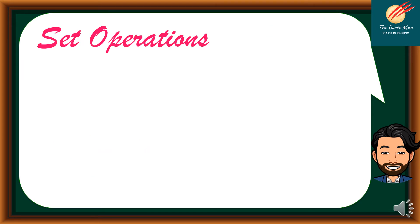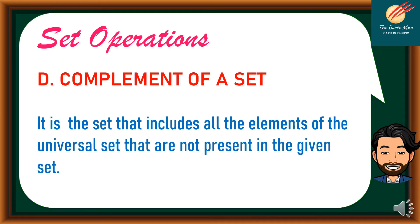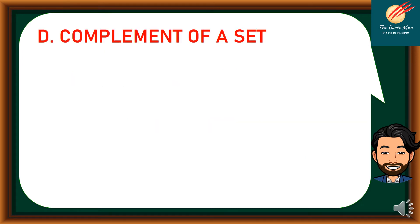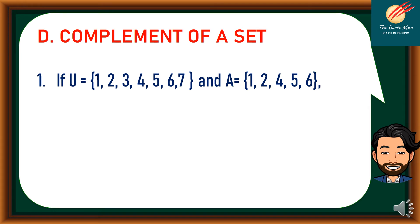Let's move on to the fourth set operation: complement of a set. It is the set that includes all elements of the universal set that are not present in the given set. For instance, if the universal set is {1, 2, 3, 4, 5, 6, 7} and A is equal to {1, 2, 4, 5, 6}, then the complement of A — written as A prime — is {3, 7}.